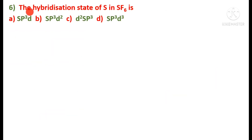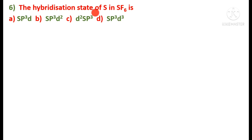Next question: the hybridization state of sulfur in SF₆ is SP³D, SP³D², D²SP³, or SP³D³? To determine the hybridization of sulfur in SF₆, we first need to know the ground state and excited state configurations of sulfur.